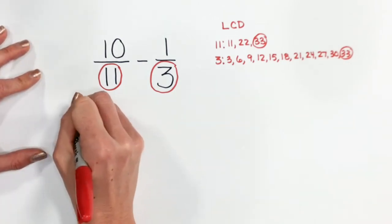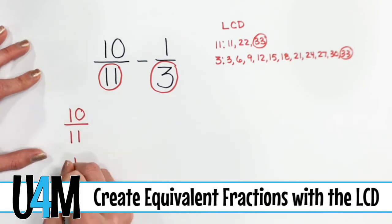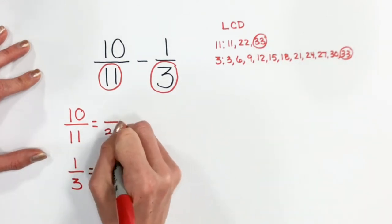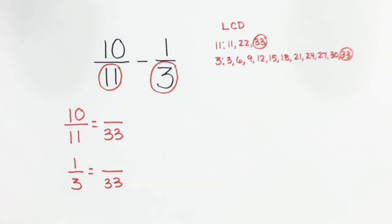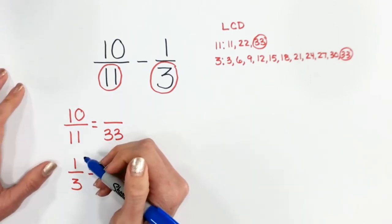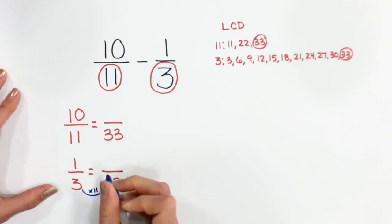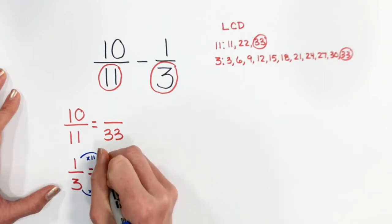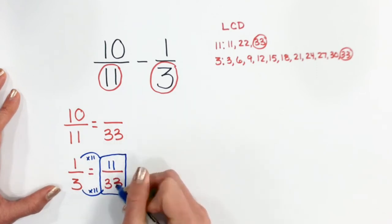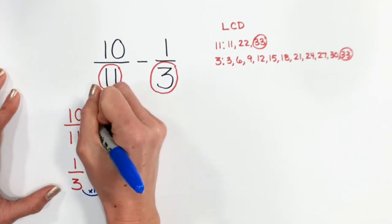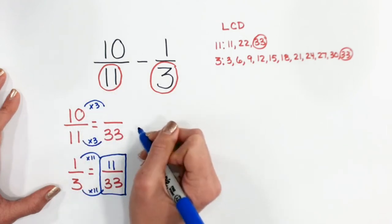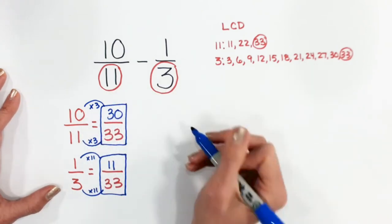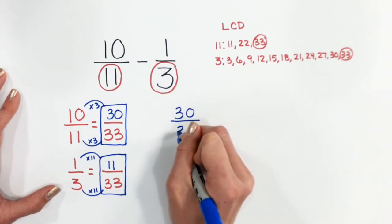So now we're going to go ahead and line up our fractions vertically so that we can find an equivalent fraction for each of these in order to subtract them. We know that our new denominator is thirty-three, so I'm going to put that down for both denominators. I know that three times eleven is thirty-three, so I must also multiply my numerator by eleven. One times eleven is eleven, so one-third is equivalent to eleven over thirty-three. Eleven times three is thirty-three, so I must multiply ten by three and I'll get thirty. So ten-elevenths is equivalent to thirty over thirty-three.